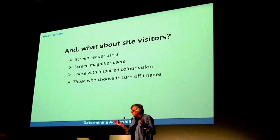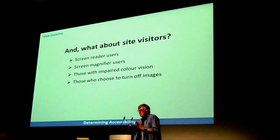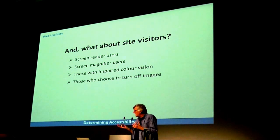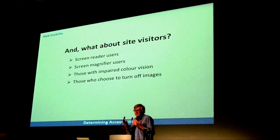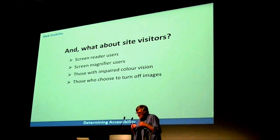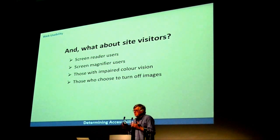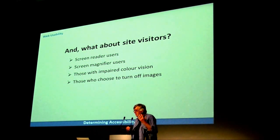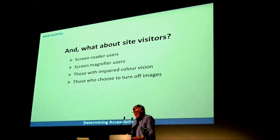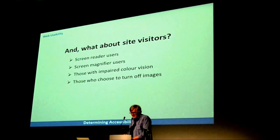Screen magnifier users — a couple of missing alt texts won't make any difference at all to them. But color contrast could quite well make a difference to them, because quite a lot of screen magnifier users have some color vision. There are also people with impaired color vision, including a large proportion of people over the age of 60, which we've found from our research. Poor color contrast could render a page totally inaccessible if it affects the text.